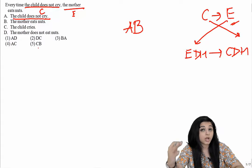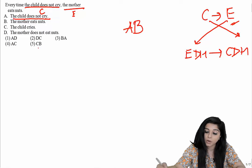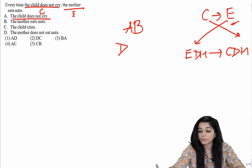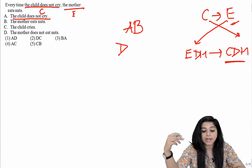Which is not in the options. We're going to look at the other one: EDH, the mother not eating nuts. Where is it? D. The child, which leads us to CDH. The child does not cry, child cries C.